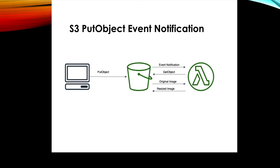Let's understand with an example what we do in today's world. We'll take an example of image resizing. Suppose your application requires a particular image in a different format — your mobile application requires different pixels or format, your iPad application might require a different format, and your laptop requires yet another format. In the current world, we put that object in our S3 bucket, and behind the scenes we have a Lambda function that gets triggered whenever a new object is put in the bucket. That Lambda function retrieves the image, resizes it, and stores it back to the S3 bucket.